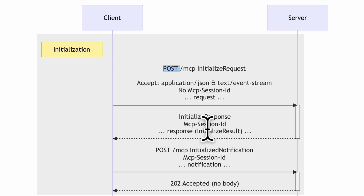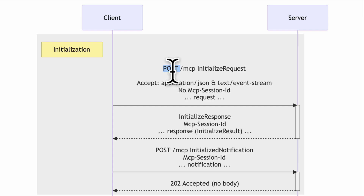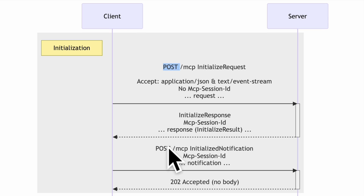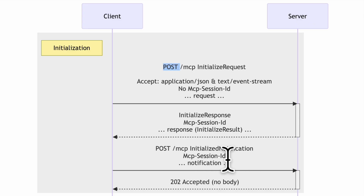This session ID will be used for subsequent communications. If the server responds with a session ID, clients must include it in the header for all further requests — that is a protocol mandate. After this initialized response, the client sends a POST request on the /mcp endpoint with an initialized notification indicating it is ready for further interactions.